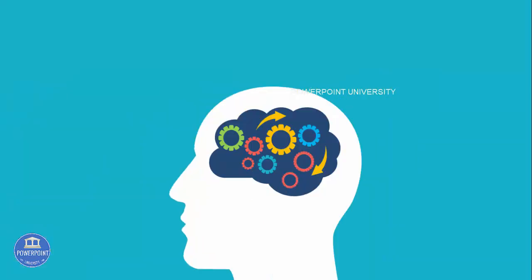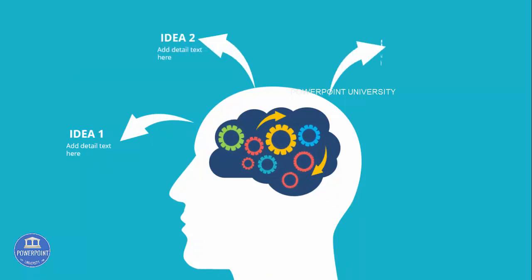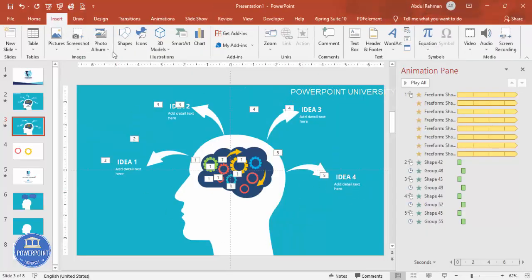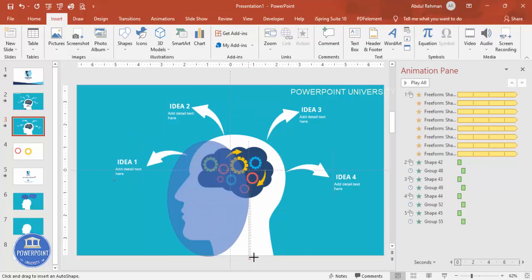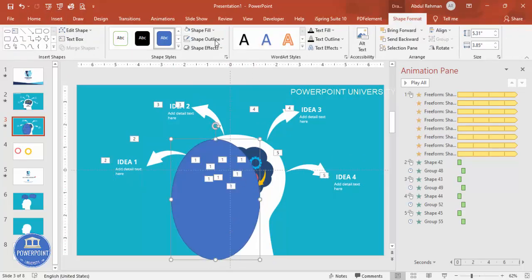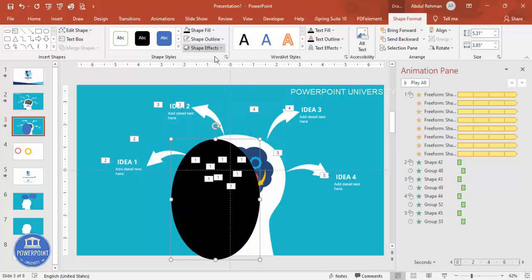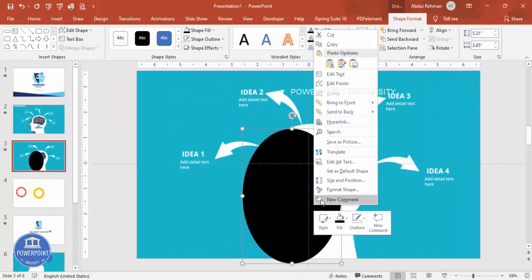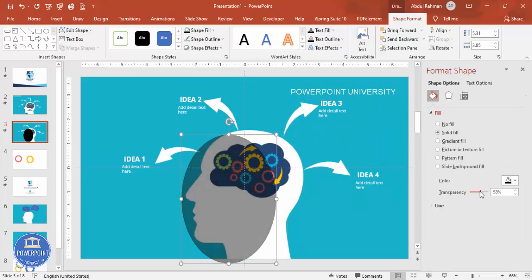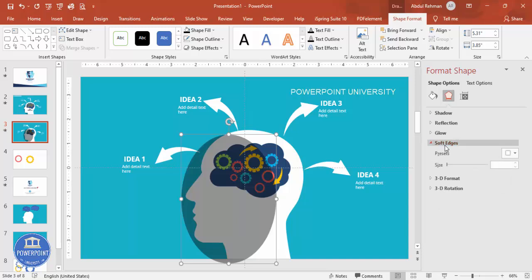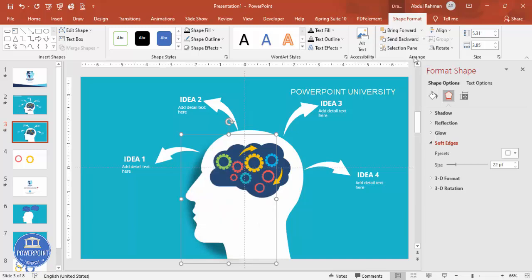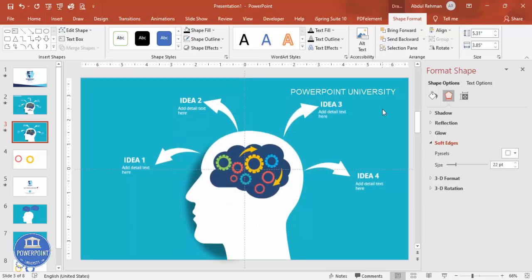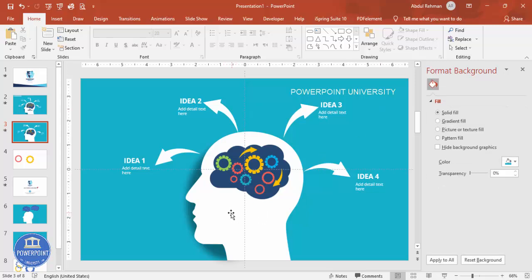When you play the slide, you'll see the gears start rotating and then Idea 1, 2, 3, and 4 appear in sequence. To add a shadow effect, go to Insert > Shapes, select the oval, set Shape Outline to No Outline and Shape Fill to black. Close the animation pane, right-click the oval and go to Format Shape, increase the transparency, then go to Effects > Soft Edges and increase the size. Finally, send this shadow shape to back. You can also add a main title to complete the slide.